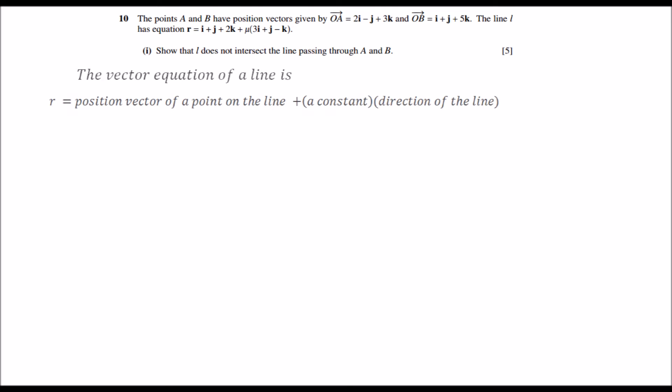The vector equation of any line is given by R equals the position vector of a point on the line, in this case either OA vector or OB vector, plus a constant that can be denoted by a letter such as gamma or mu times the direction of the line. So let's begin by calculating the direction of the line passing through A and B. That is AB vector, which is simply equal to OB vector minus OA vector.